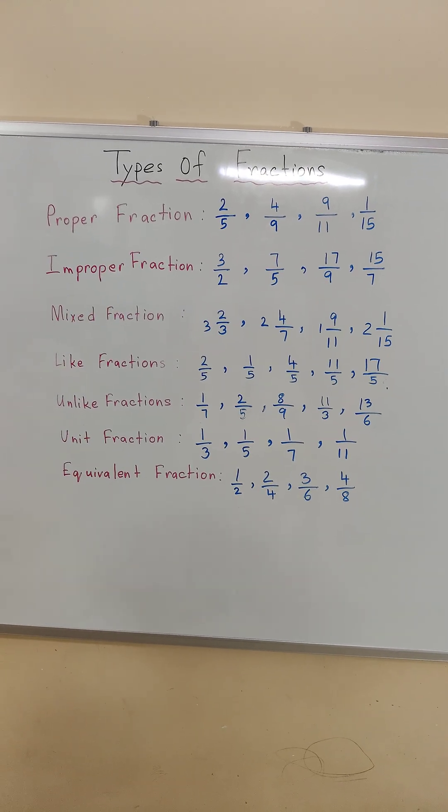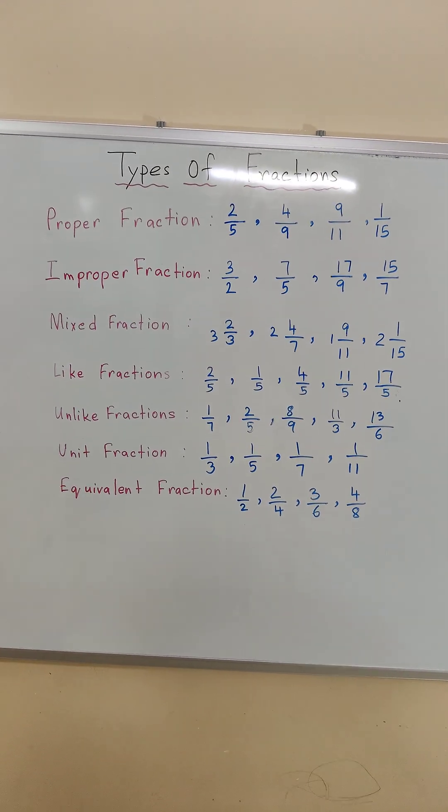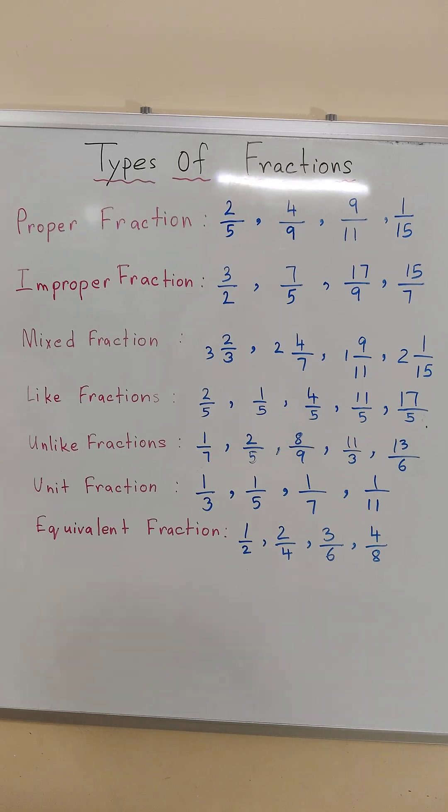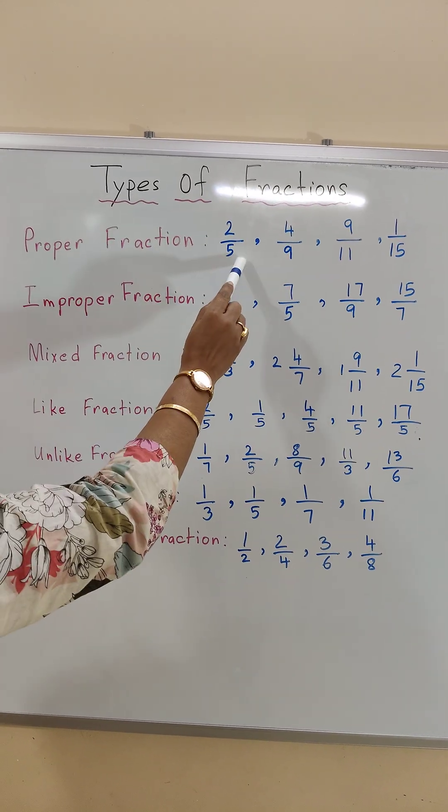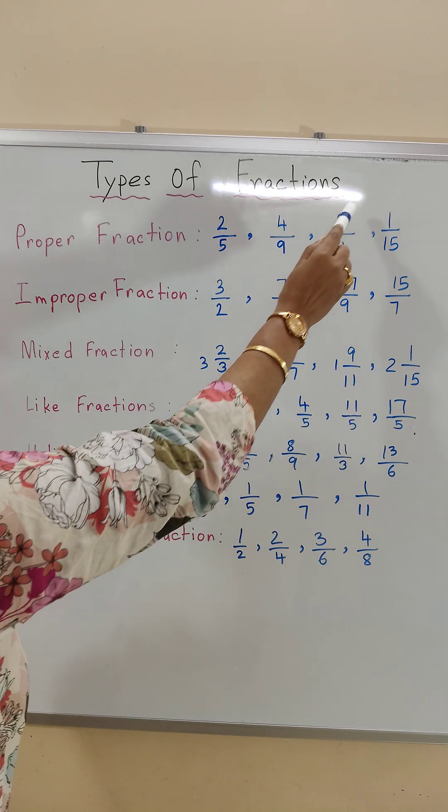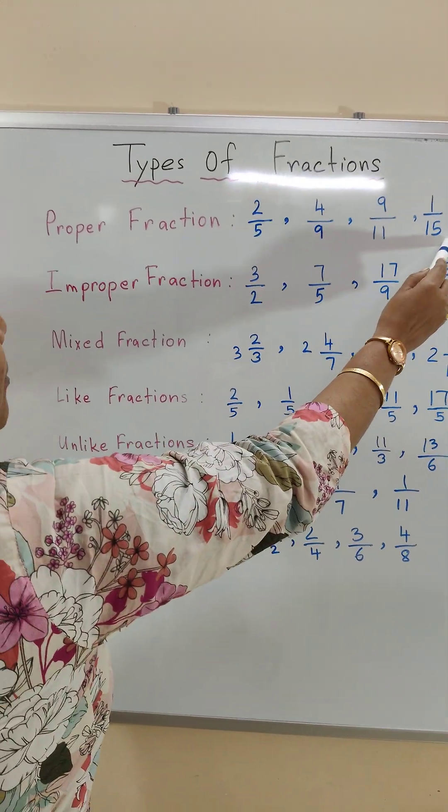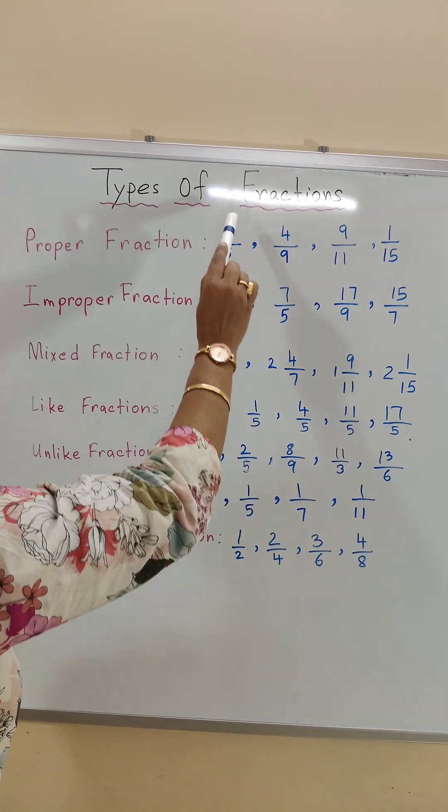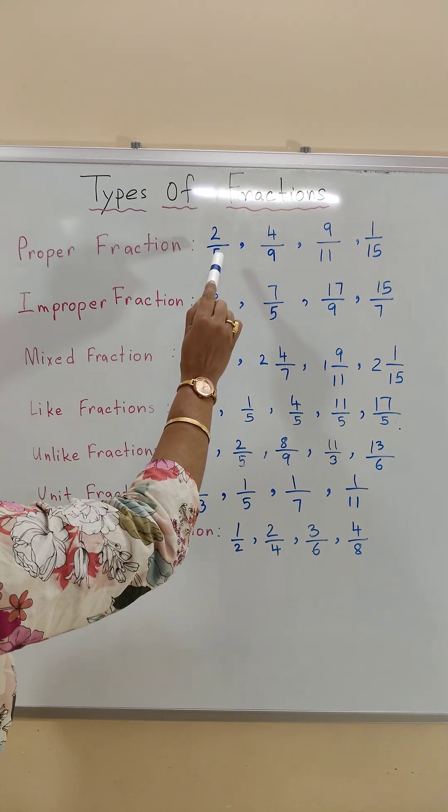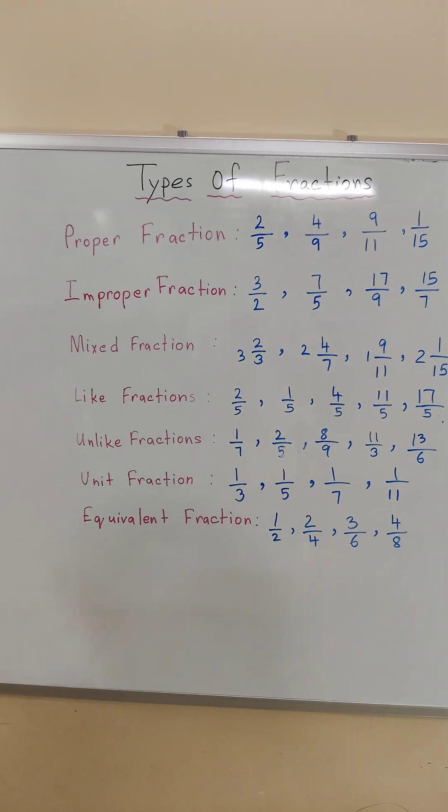Proper fractions are those fractions whose numerators are smaller than the denominators. So the examples are 2 by 5, 4 by 9, 9 by 11, 1 by 15, where all the fractions have the smaller numerator than their denominators.